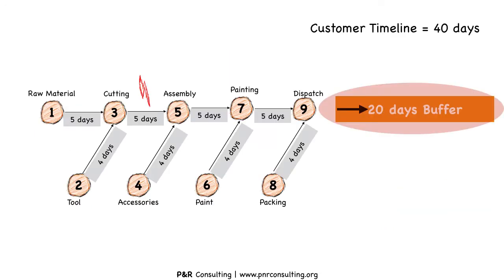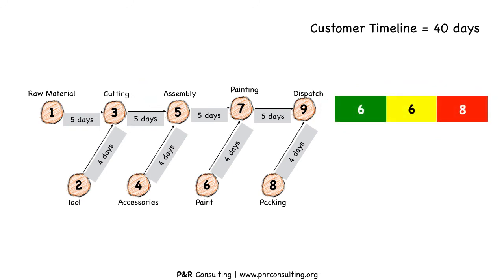The question is: what to monitor in a project? Which variable would help us understand its status better? It is the buffer that we need to focus on to check if the project is on track or off track. However, this buffer is very raw and not useful as such — it should be designed with right indicators to help us understand if slippage is acceptable or will impact the project. Thus we divide the time buffer into three zones: green, yellow, and red. Here we have divided 20 days into 6 in green, 6 in yellow, and 8 in red.